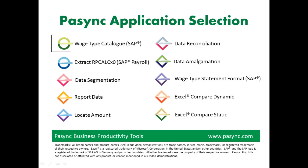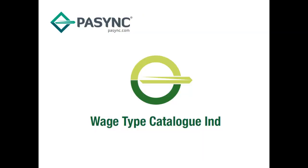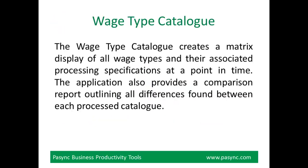Welcome to the Passink Wage Type Catalogue Individual Quick View. The following video is a short demonstration of the steps involved and shows the ease of use when processing. The Wage Type Catalogue creates a matrix display of all wage types and their associated processing specifications at a point in time. The application also provides a comparison report outlining all differences found between each processed catalogue.